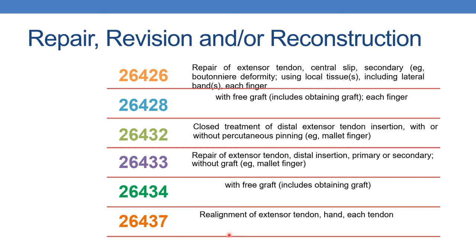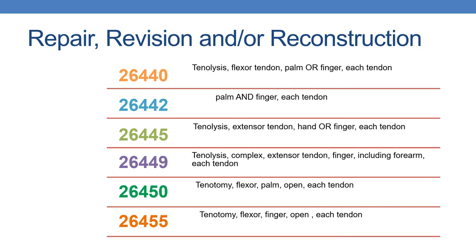Next is 26437: realignment of extensor tendon, each tendon. The next CPT is 26440: tenolysis, flexor tendon, palm or finger, each tendon. And for palm and finger combined, report 26442. Next is 26445: tenolysis, extensor tendon, hand or finger, each tendon.